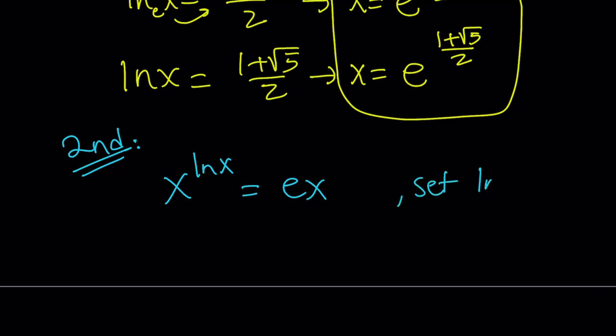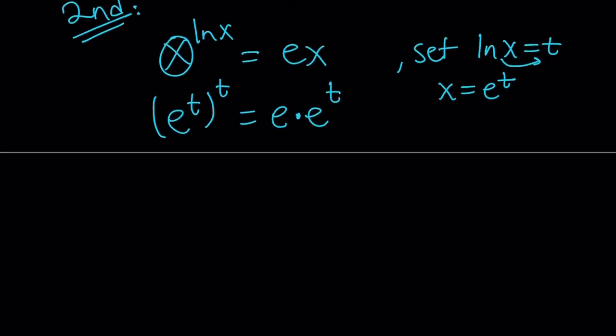You can set ln x equal to something. Let's set it equal to t. What happens to x? Well, if you use the definition of logs again, you get e to the power of t is equal to x. So we can write x as e to the power of t. E to the power of t to the power of ln x, which is t. And now here we can replace x with e to the power of t again. So we're basically multiplying two powers of e. And here it's power over power, so we multiply the powers or exponents.